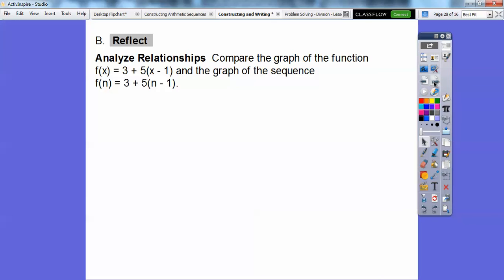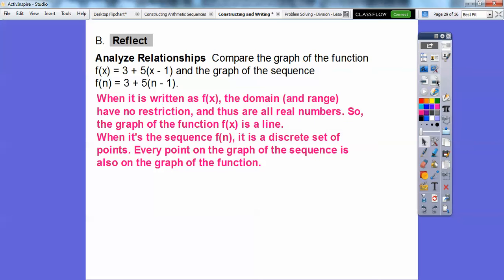Compare the graph of the function f(x) = 3 + 5(x - 1) and the graph of the sequence f(n) = 3 + 5(n - 1). When it's a sequence, then whole numbers: 1, 2, 3, 4, 5. When it's a function f(x), there are no restrictions. So when it's written as f(x), the domain and range have no restrictions and it's all real numbers. So the graph of the function is a line.